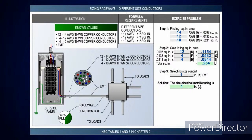Looking at this one with different-size conductors — I've got 12 number 14s, 4 number 12s, and 4 number 10s going into that junction box. You're going to go look at Chapter 9, Table 5 to get the square inches. We went ahead and put the square inches here for you to follow along. So: 0.0097 square inches is a number 14 conductor, 0.0133 square inches is a number 12, and 0.0211 square inches is a number 10.